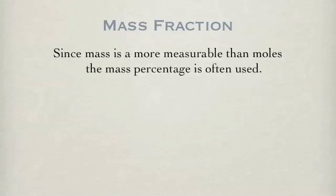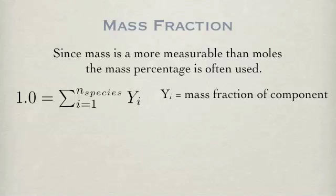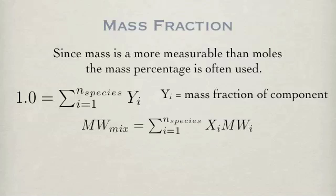Since mass fraction is more directly measurable than moles, the mass percentage is often used. It is similar in concept to the mole fraction in that the sum is equal to 1. The difference is that the fraction is with respect to weight. In combustion literature, this is actually the most common form when talking about quantity of a species within a combustion process. The key to conversion between mole fractions, concentrations, pressures, or moles to mass fractions is the molecular weight of the species involved.